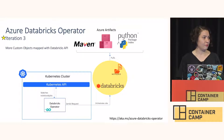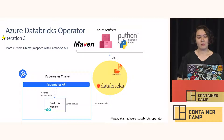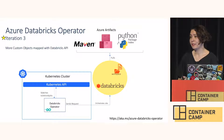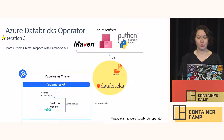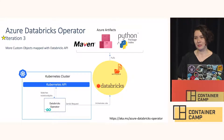In iteration three, which we released this week, we expanded to more kinds and more types. It works with Databricks and is kind of a one-to-one mapping with all of the objects that Databricks has.